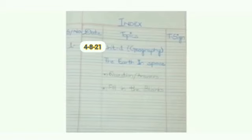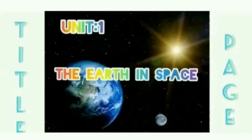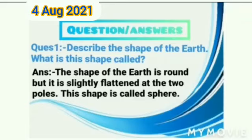Make the index in two pages — first page and second page. On the next page, make the title page: Unit 1, The Earth in Space. Then start the question answers of Unit 1. In the corner, write the date, then Unit 1.